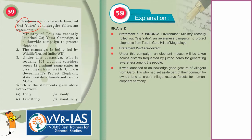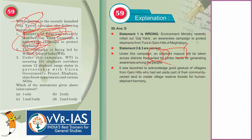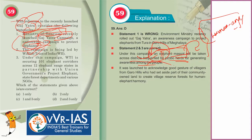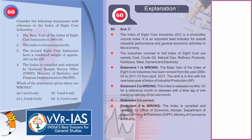The 59th question refers to the recently launched Gaj Yatra. The campaign was launched by the Ministry of Environment (not Ministry of Tourism) and is being led by the Wildlife Trust of India. Under this campaign, an elephant mascot will be taken across districts frequented by elephant herds for generating awareness among the people. This is intended to avoid elephant casualties due to human-animal conflict.